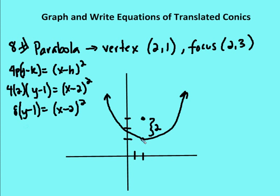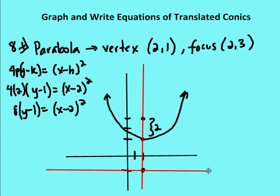I'll also find the equation for the directrix. The axis of symmetry runs through the center of the parabola, through the focus and vertex. The directrix intersection point is 2 units in the opposite direction along the axis of symmetry from the focus. I draw the directrix through that point perpendicular to the axis of symmetry, and the equation for that line is y equals negative 1.